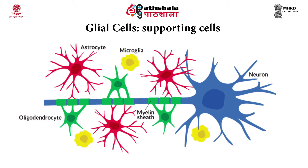They have different functions: astrocytes provide the blood-brain barrier, microglial cells participate in immune functions, ependymal cells produce the cerebrospinal fluid, and oligodendrocytes form the myelin sheath of central nervous system cells. In the peripheral nervous system, Schwann cells provide the myelin sheath to peripheral nervous system cells, while satellite cells help in covering the neuronal cells.